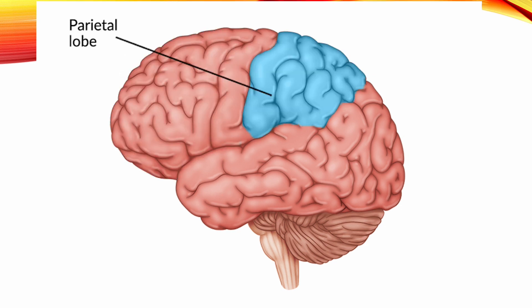Parietal lobe. This lobe is located behind the central sulcus and includes the postcentral gyrus, the superior and inferior parietal lobules, the supramarginal and angular gyri, and the sulci between them.